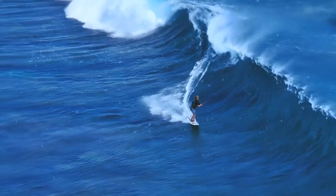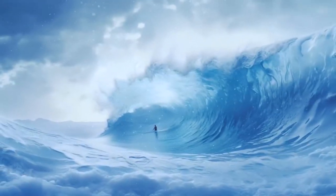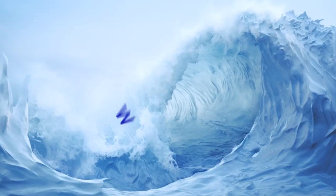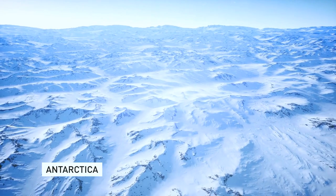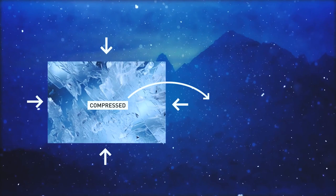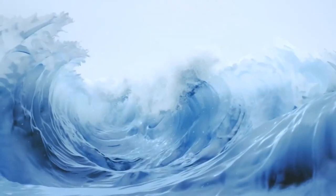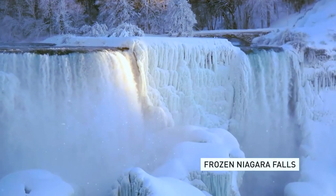Imagine surfing a perfect wave when it suddenly freezes — it sure sounds creepy. But you can see mind-boggling frozen waves in Antarctica. These waves occur when the ice gets compressed and the ever-increasing pressure squeezes the air bubbles out of it. As for the beautiful blue color, it's the result of the ice melting and refreezing.